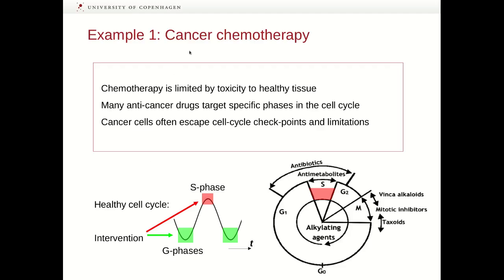In our first example, we will look at cancer chemotherapy. We know that chemotherapy is limited by the toxicity to healthy tissue. Many anti-cancer drugs target specific phases in the cell cycle, for instance the S phase where new DNA is being synthesized. We also know that cancer cells often escape the cell cycle checkpoints and limitations in order to grow indefinitely. This can be exploited because healthy cells have a cell cycle that has a circadian component.